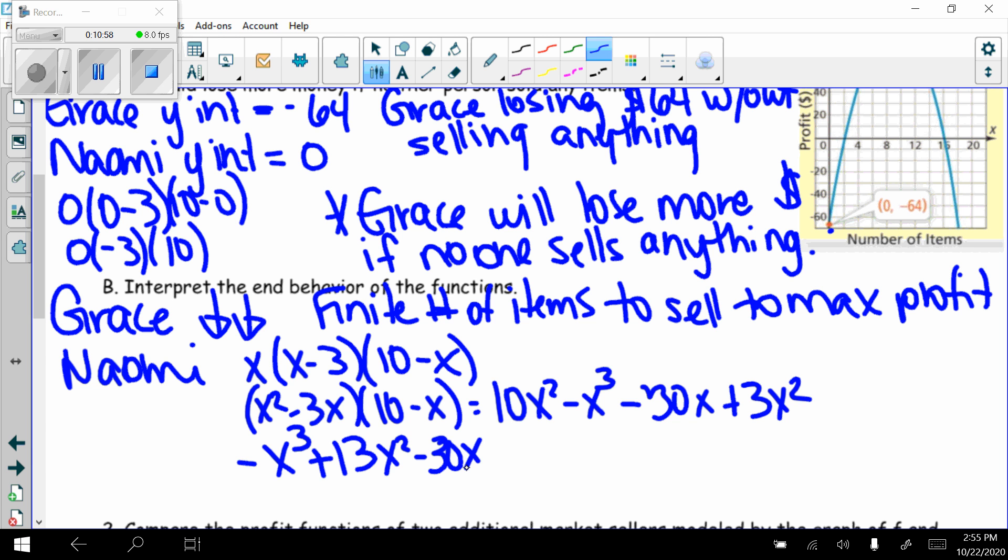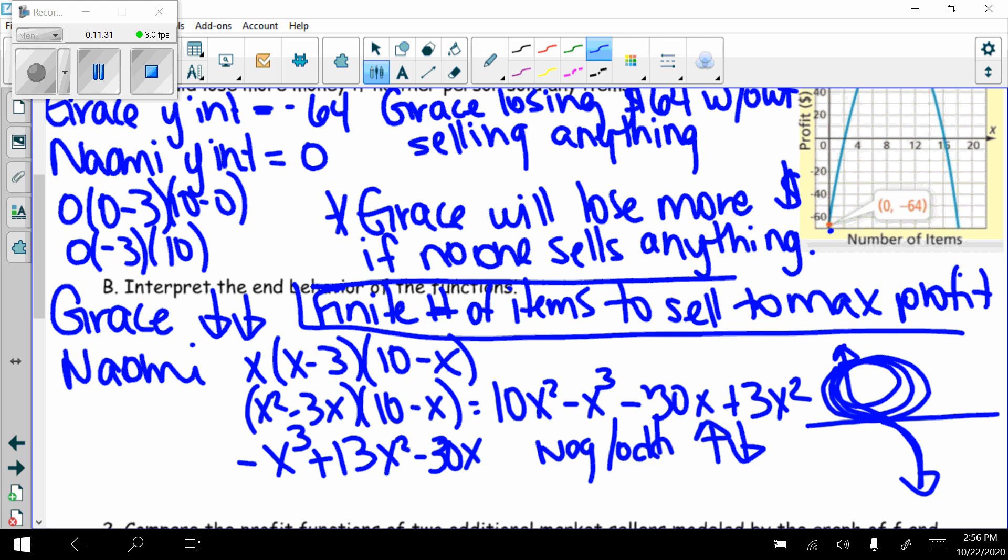So my end behavior, I'm at negative and odd. That tells me my end behavior is up and down. So the graph would look something like this. Again, this is my y-axis. She can only sell a certain amount to maximize profit, and then we're going to start losing money. A finite number of items to sell in order to maximize profit. That's what their end behaviors will tell me.